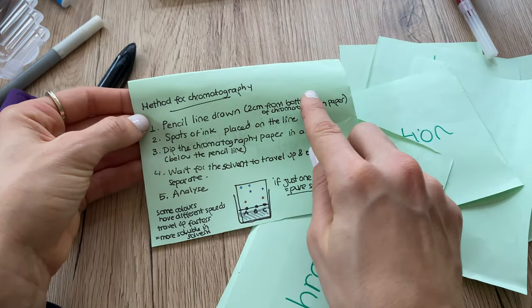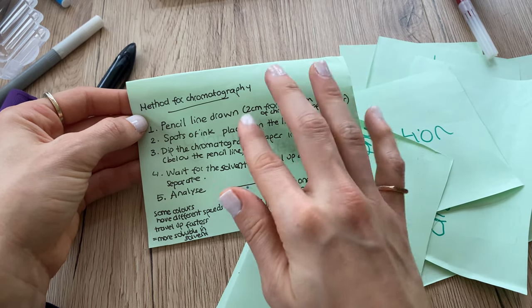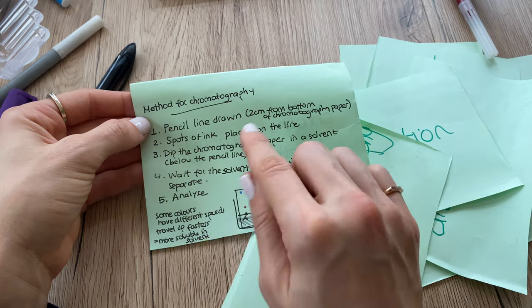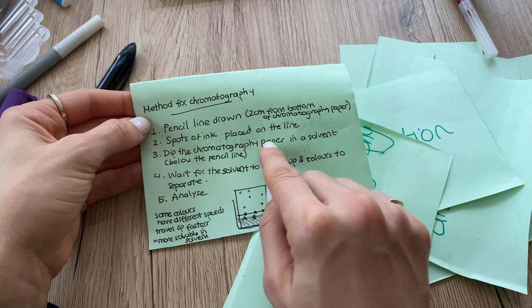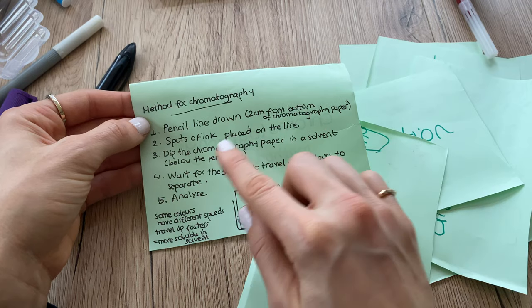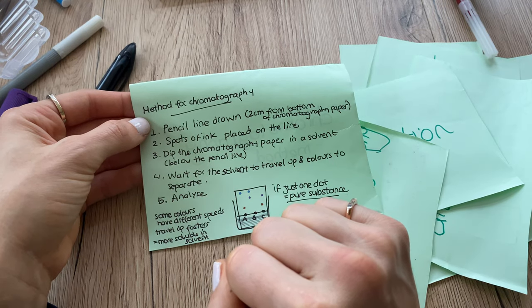The method here: pencil line drawn 2 cm from the bottom of the chromatography paper, spots of ink placed on the line, dip the chromatography paper in a solvent below the pencil line.